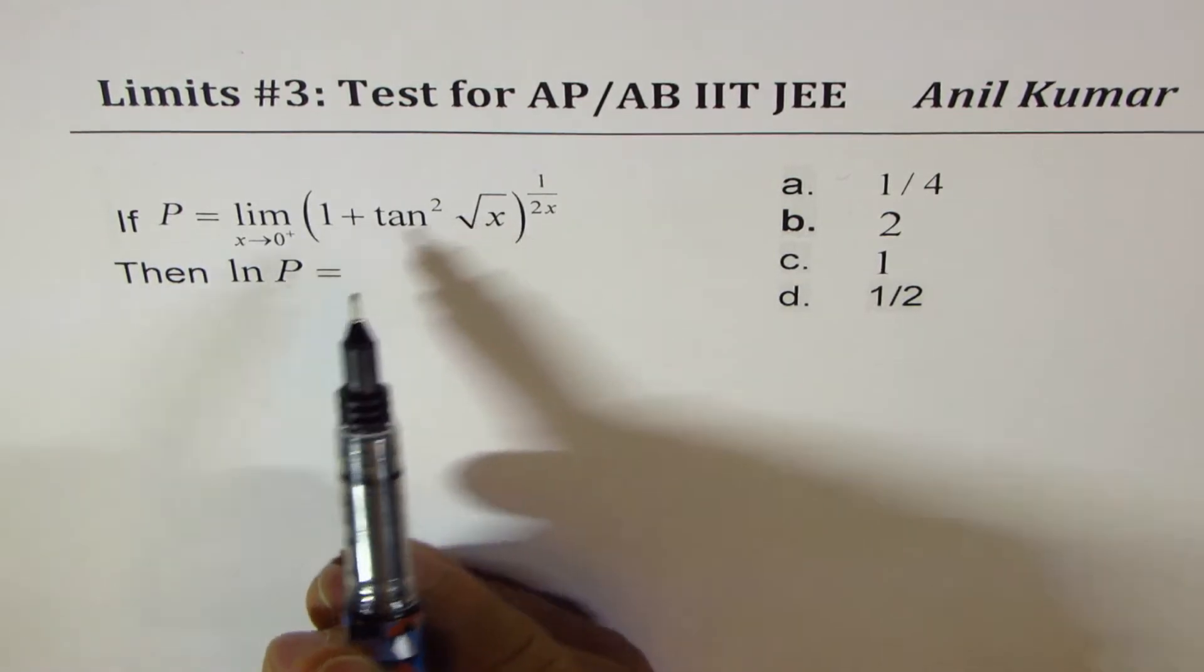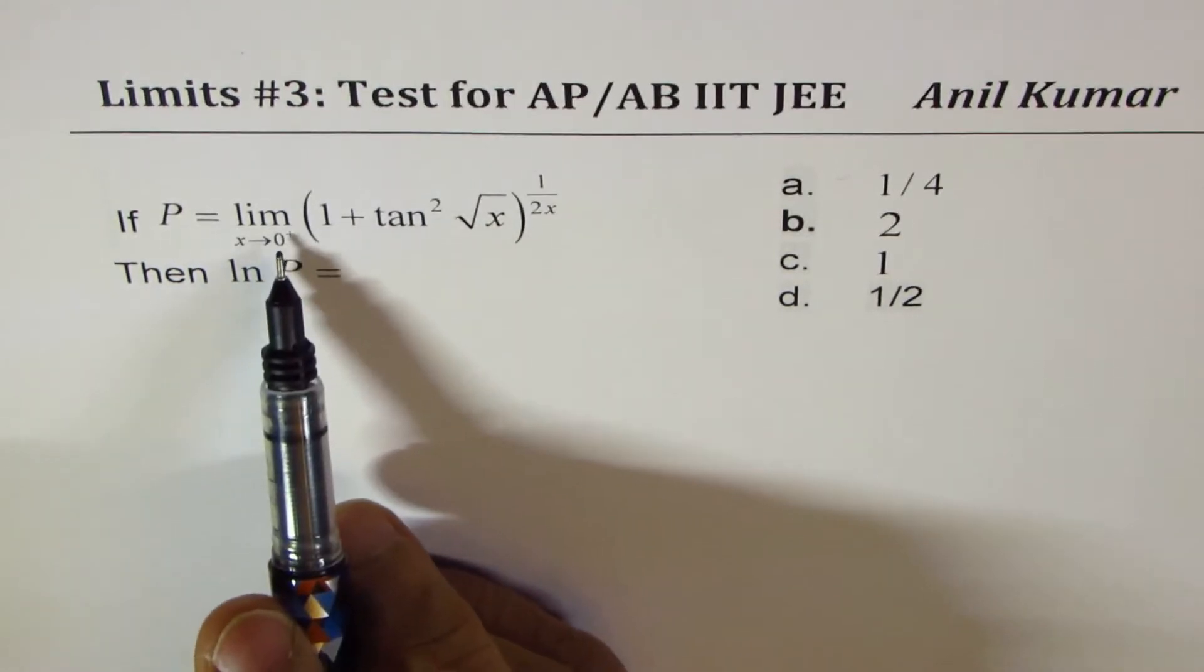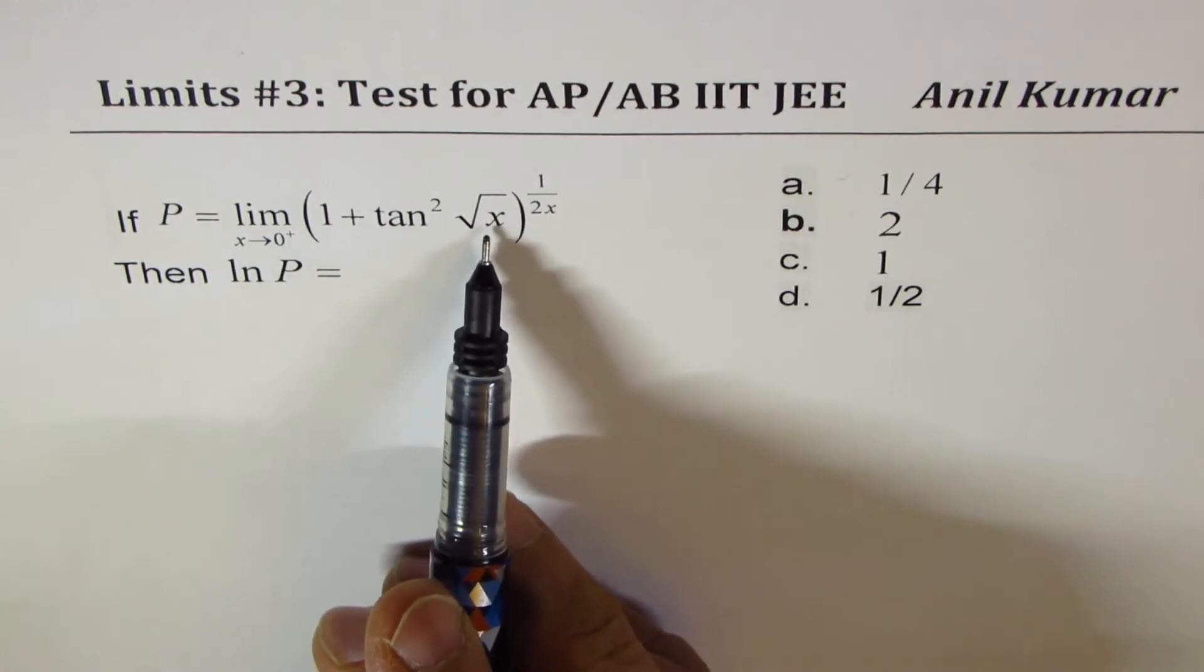Now in this expression, if I substitute 0, it is 0 plus, which is a domain of square root x.